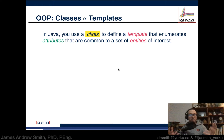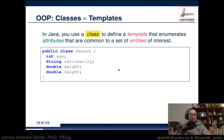Classes are also generally referred to as templates. In this course we've been talking about classes, but in a more general context you'll hear them named as templates, maybe in other languages as well. In Java, you use a class to define a template that enumerates attributes common to a set of entities of interest. Basically, the class is a plan — a template is a plan that has characteristics.